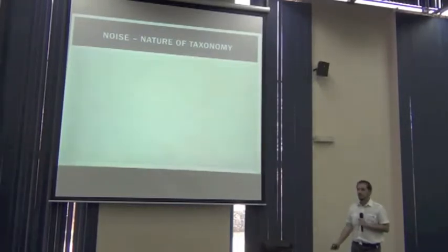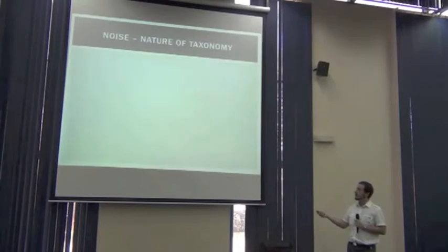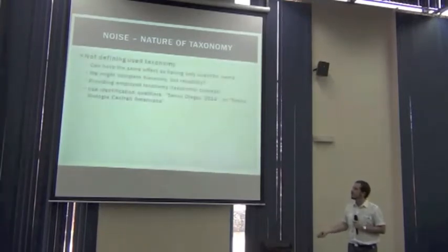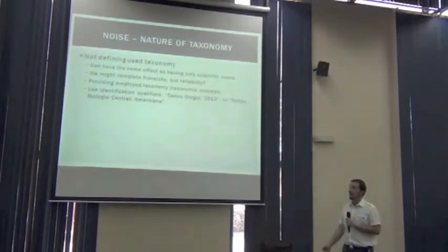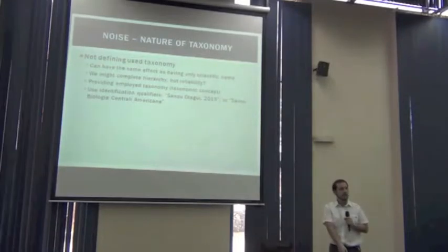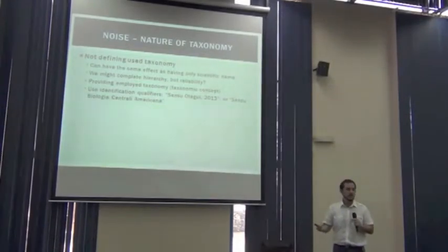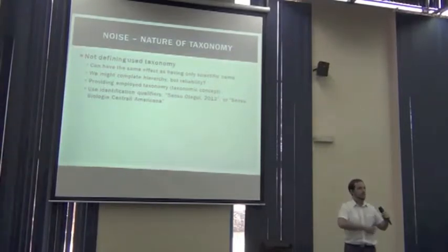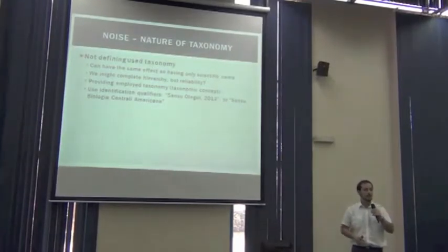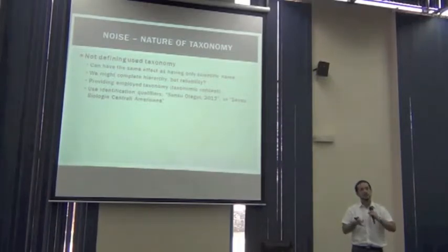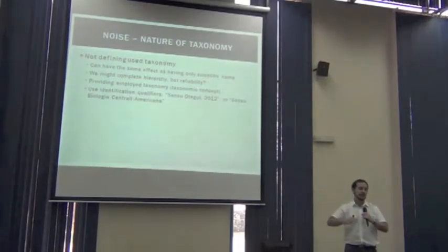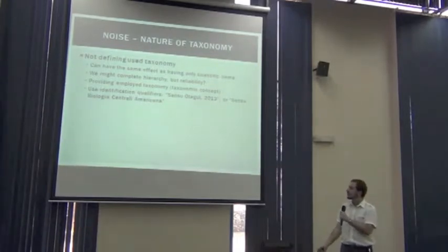Taxonomy can be so messy that issues appear naturally. For example, not defining the use of taxonomy when we identify an organism has the same effect as having only the scientific name. We have no information on the background of that name. We don't know who described that species or which taxonomy hierarchy or classification is applied to that scientific name.